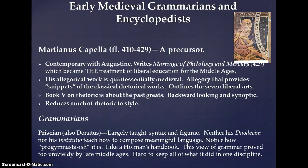Augustine's writing his own treatise. Marcianus Capella is doing what later medieval people would do, and that is to put together a kind of an encyclopedia — snippets, a greatest hits collage of previous material. He's doing it for the express purpose of providing a manual for teaching. That's clear, and Augustine's not really doing it in the same way, but Capella outlines the several liberal arts. Book five on rhetoric is about all of the past greats.